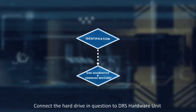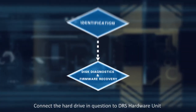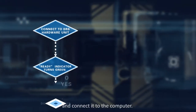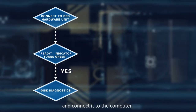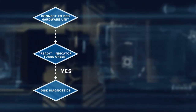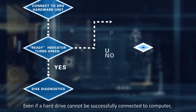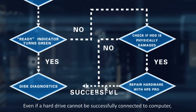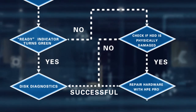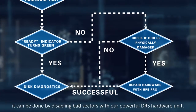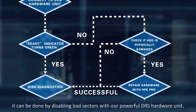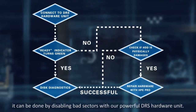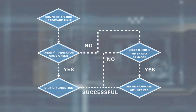Connect the hard drive in question to the DRS hardware unit and connect it to the computer. Even if a hard drive cannot be successfully connected to the computer, it can be done by disabling bad sectors with our powerful DRS hardware unit.